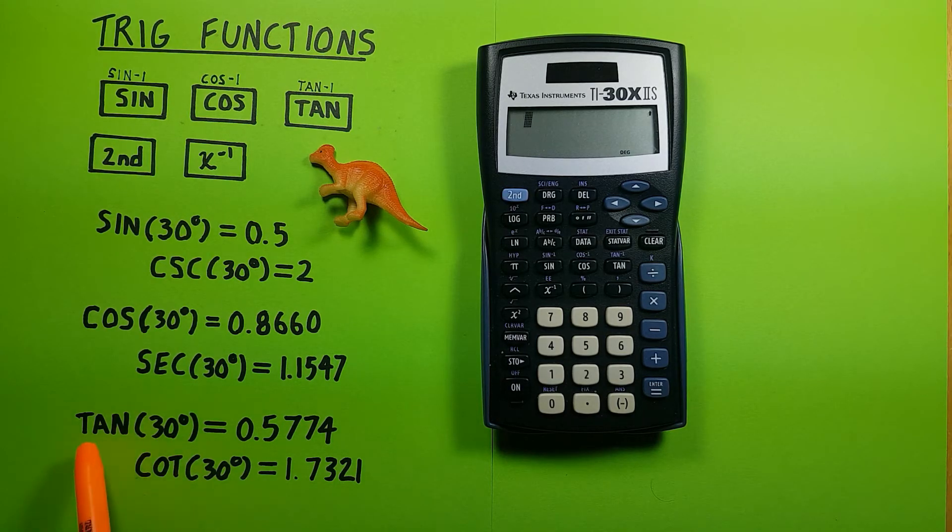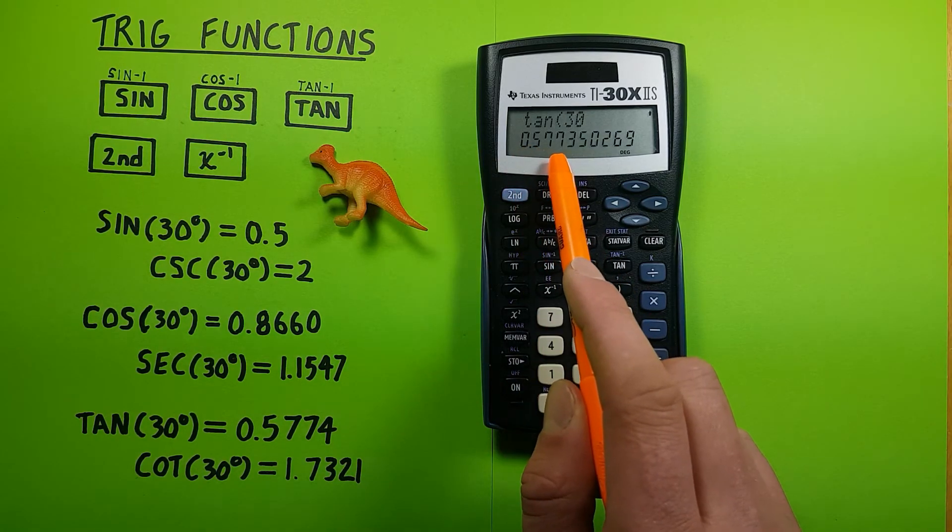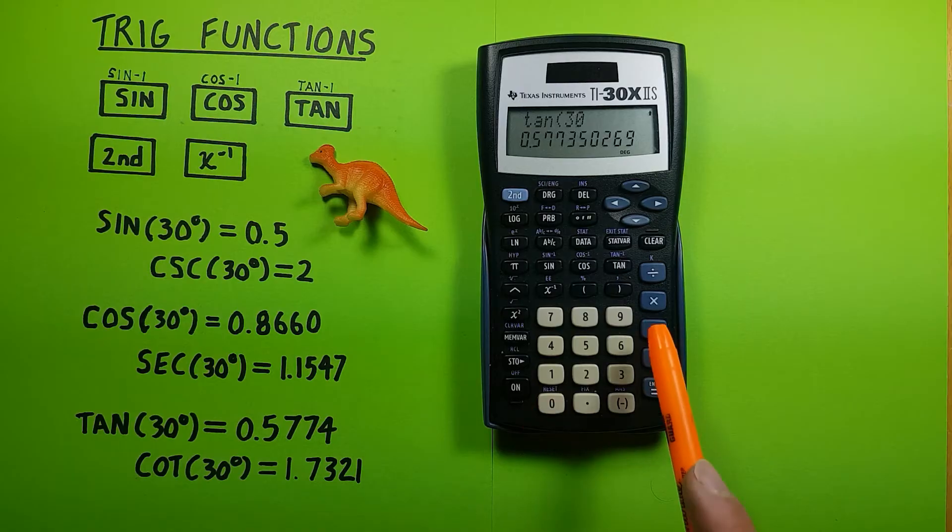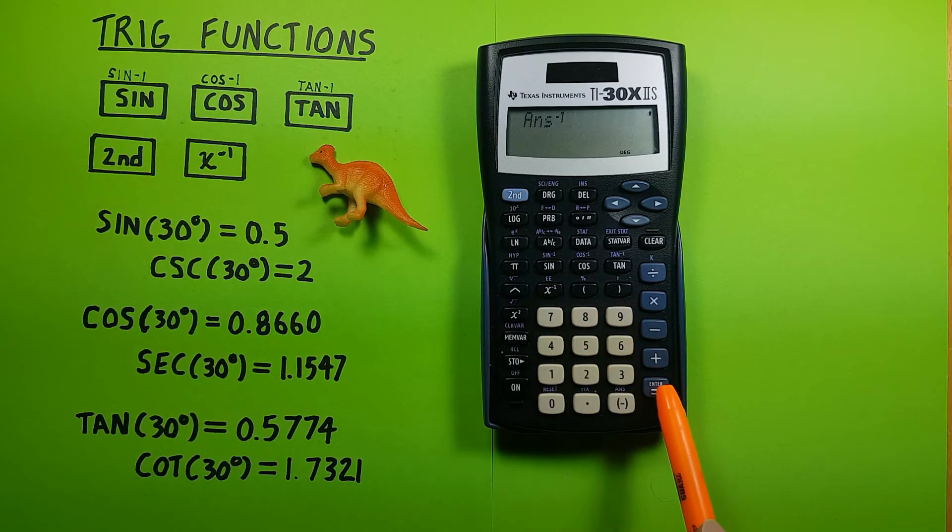For cotangent, we use tan. So we go tan of 30 equals 0.5774, and then inverse that to get a cotangent of 30 degrees equal to 1.7321.